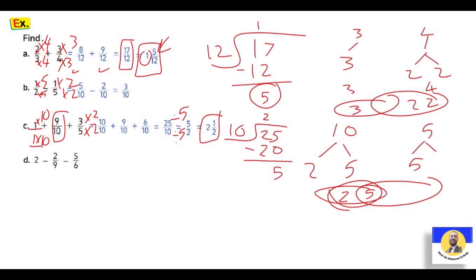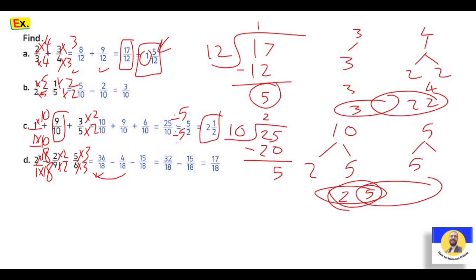Letter D: 2 minus 2 over 9 minus 5 over 6. الـ 2 دي هي 2 over 1. نشوف الـ nine والـ six: الـ LCM بينهم هي eighteen. الـ nine بقت 18: عملنا × 2، يبقى 2 × 2 = four over 36. والـ six بقت 18: عملنا × 3، يبقى 5 × 3 = fifteen over 18. الـ 2 over 1 عملنا لها × 18 up and down = 36 over 18. فـ 36 - 4 = 32 over 18، ثم 32 - 15 = seventeen over eighteen.